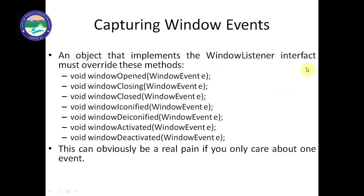An object that implements the WindowListener interface must override all these methods: windowOpened, windowClosing, windowClosed — where closing means attempting to close and closed means fully closed — windowIconified when minimizing, windowDeiconified when restoring from minimized, windowActivated, and windowDeactivated. This can be a real pain if you only care about one event. WindowEvent is the predefined class and e is its object, which records whichever event is generated.